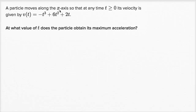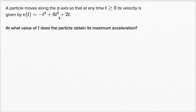A particle moves along the x-axis so that at any time t greater than or equal to zero, its velocity is given by v(t) = -t³ + 6t² + 2t. At what value of t does the particle obtain its maximum acceleration?